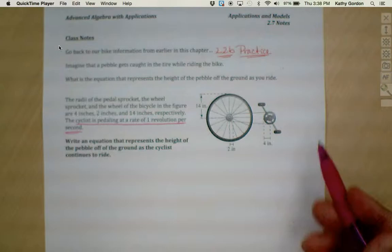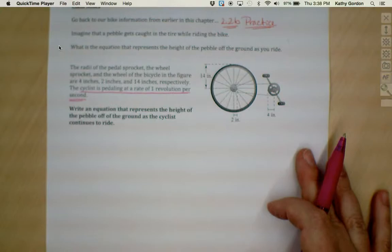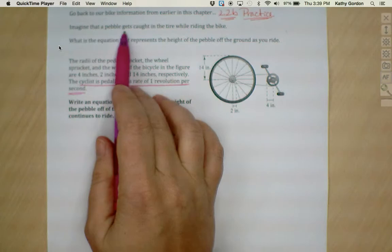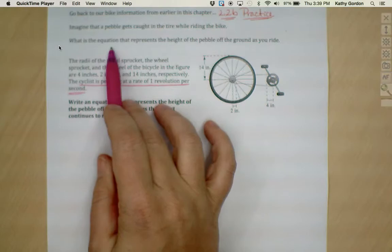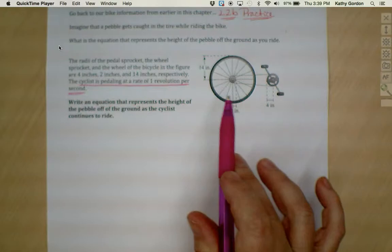In the previous problem, we were asked to figure out what would the speed of the bicycle be under these conditions. Today, the problem is just a little bit different. We want to imagine that a pebble gets caught in the tire while you're riding the bike. What would be the equation that represents the height of the pebble off the ground as you ride?